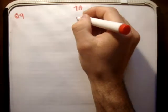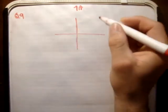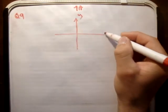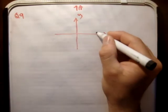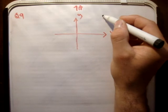So the first thing we do is we draw our xy plane. We draw our y axis and we draw our x axis, that makes the xy Cartesian plane. The next thing we do is we draw our vector u.